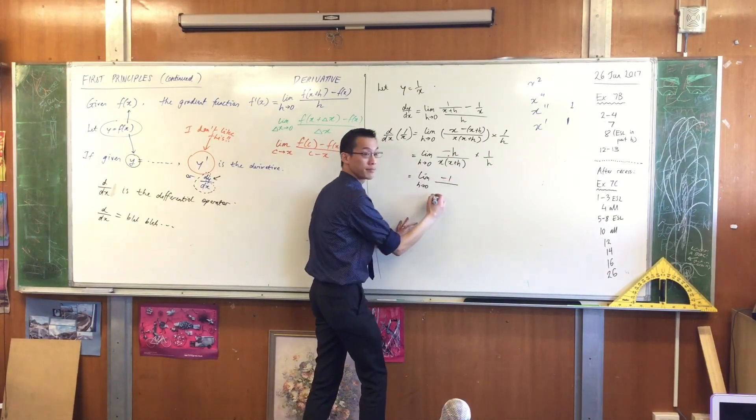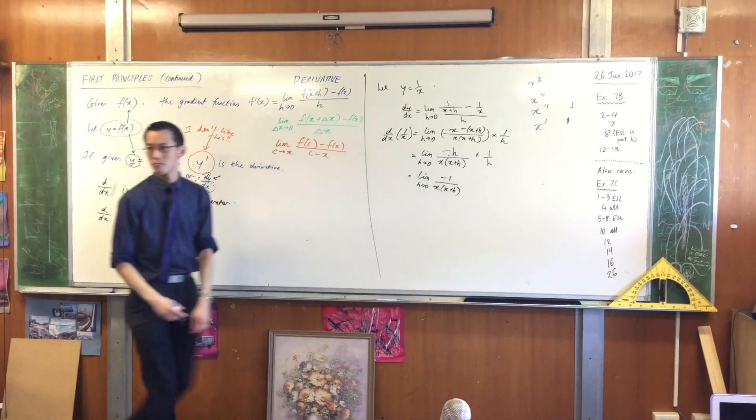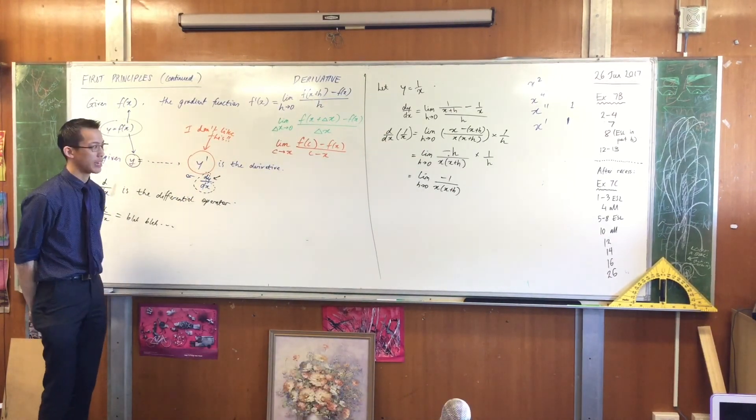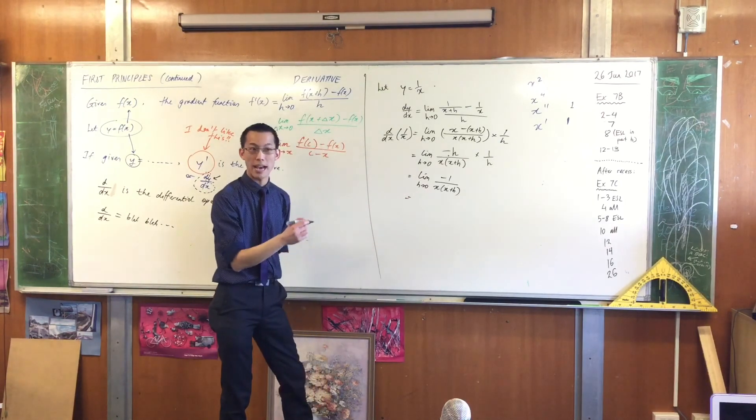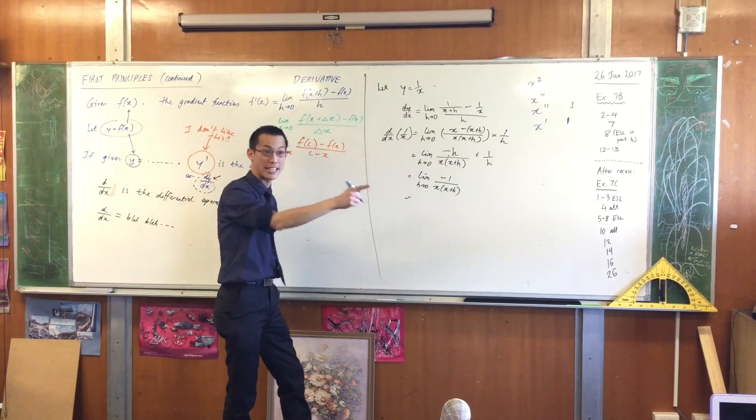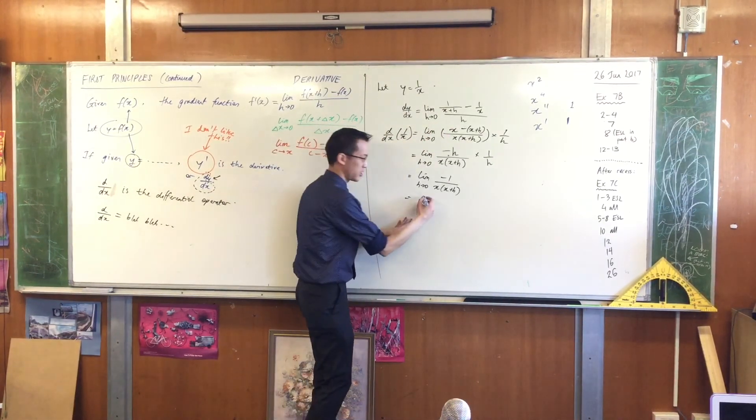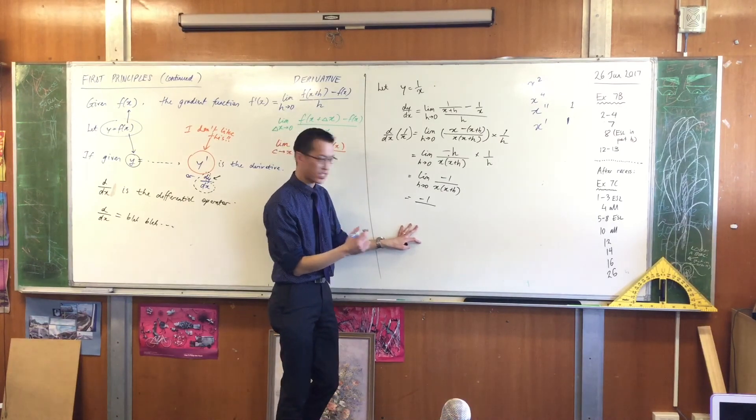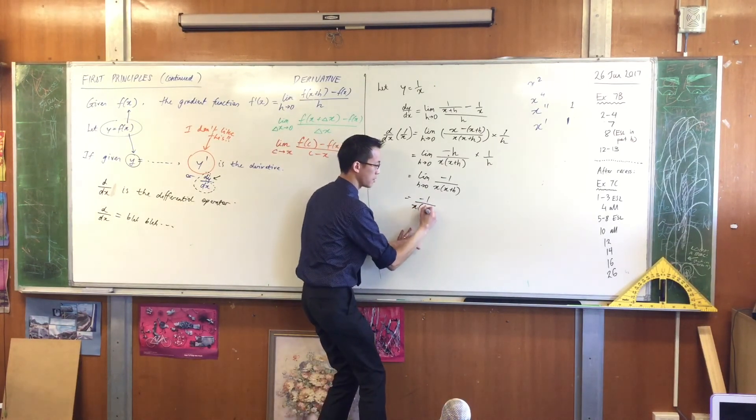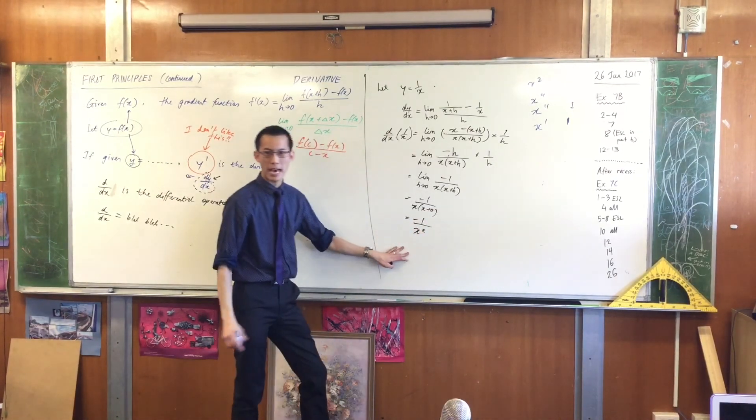So that leaves me with the limit as h approaches 0 of what? Negative 1 over—How does that look? Does that look okay? At this point, I can actually see what happens when h really gets to 0, which I couldn't do before. The top's just going to be negative 1. What do you get down the bottom? You just get x squared. x times x plus 0. So lo and behold, we have an answer here.